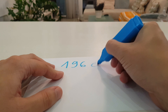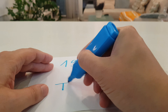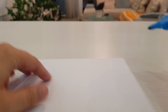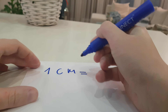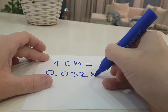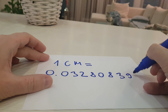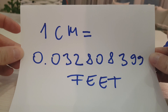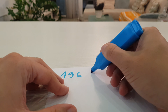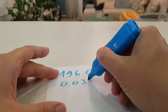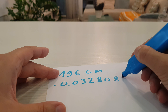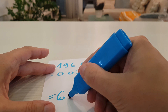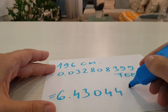In this video I will show you how to convert 196 cm to feet. Here is a formula: 1 cm equals 0.032808399 feet. We multiply 196 cm with 0.032808399 feet, and the result is 6.430446 feet.